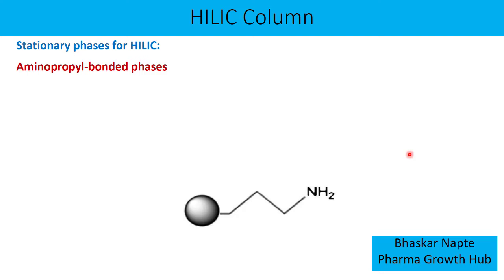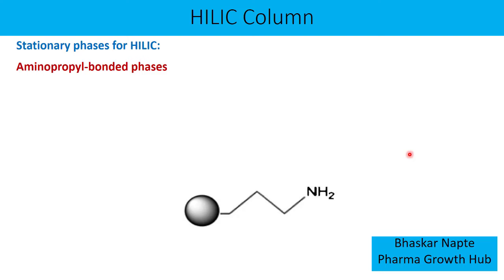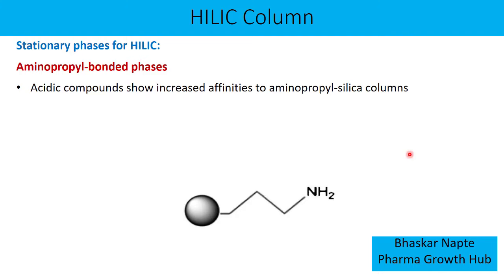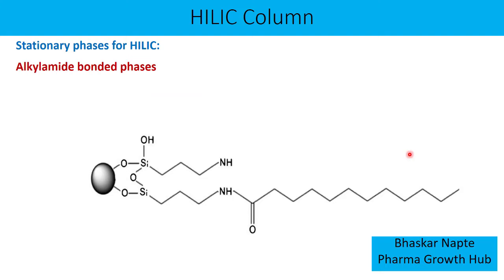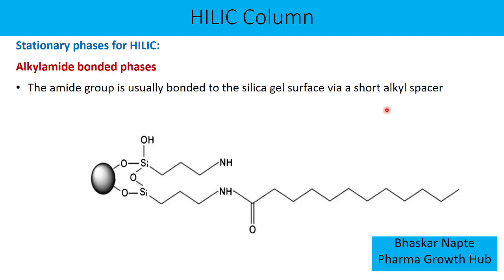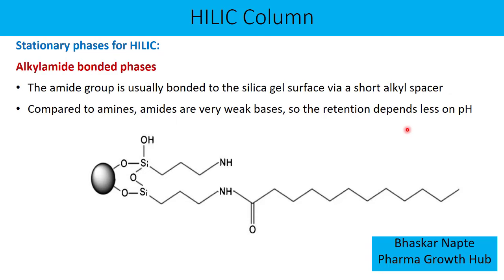The next stationary phase for HILIC is the aminopropyl bonded phase. Acidic compounds show increased affinity to aminopropyl silica columns because it is basic in nature. The next stationary phase is the amide bonded phase, where the amide group is bonded to the silica gel surface via a short alkyl spacer. Compared to amines, amides are very weak bases and therefore the retention in amide stationary phases is less dependent on pH.